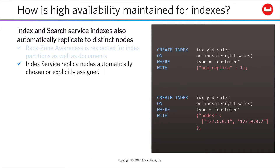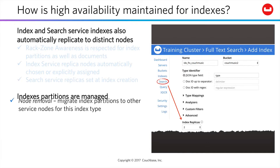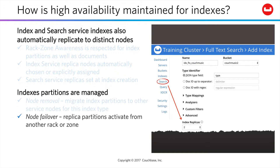You specify the number of index service replicas during index creation, either as just a replica count — leaving the placement automatic — or, if appropriate, specifying particular nodes for partition placement. Partition placement is automatic by default, but also configurable via REST. Index partitions are managed for you. If you remove a node, its partitions are migrated to another appropriate node. If you fail over a node, replicas for its partitions activate from another rack or zone.